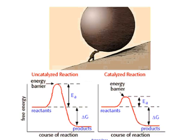Here's an analogy: think of somebody pushing a ball up a hill. The hill represents the activation energy — the energy barrier. If it's a really big hill, it takes a lot of time and energy. What catalysts do is make the hill smaller, so it's easier to get up and over. Getting over the hill means the reaction has happened. Catalysts lower the activation energy, which makes it easier for reactions to occur.